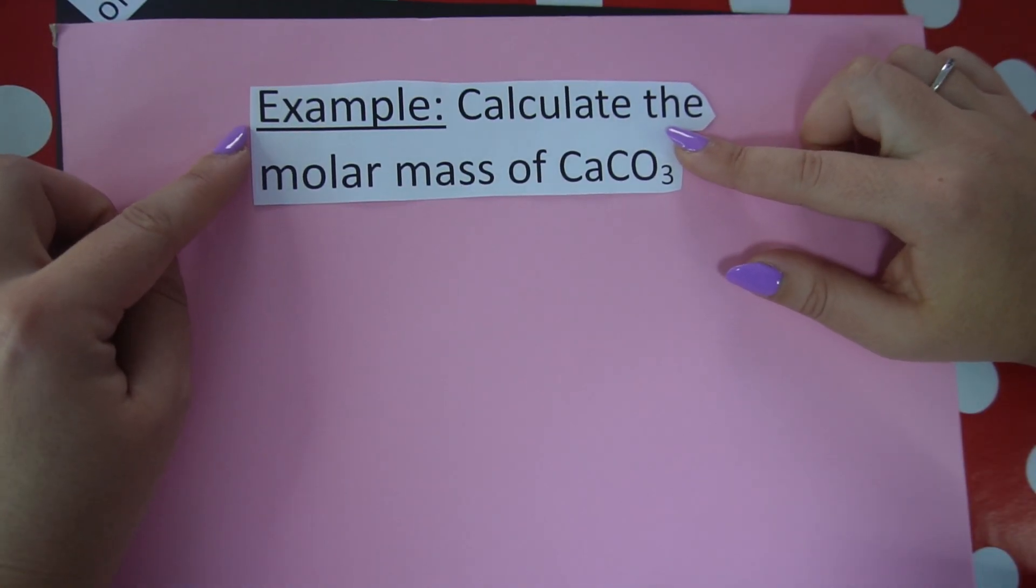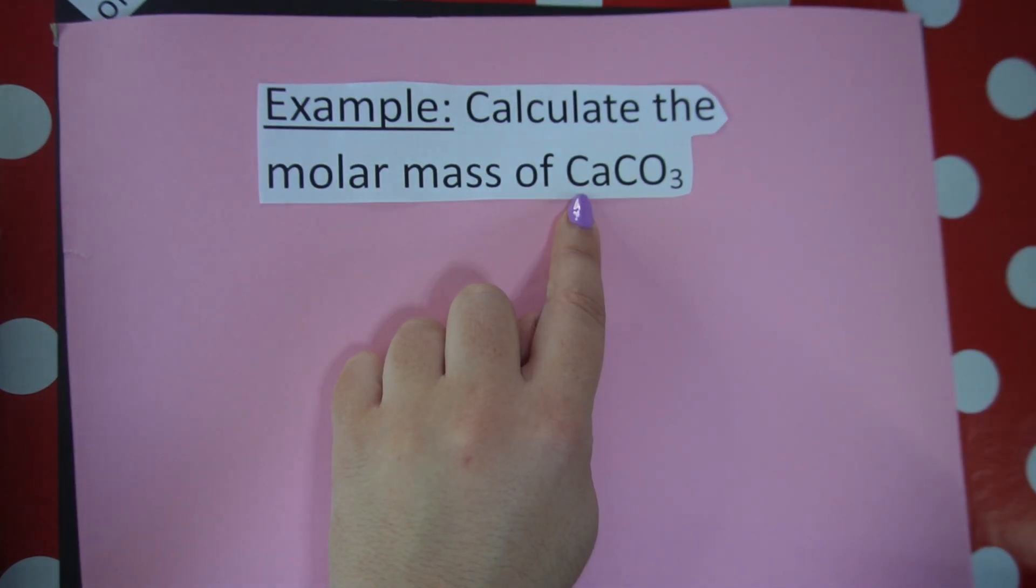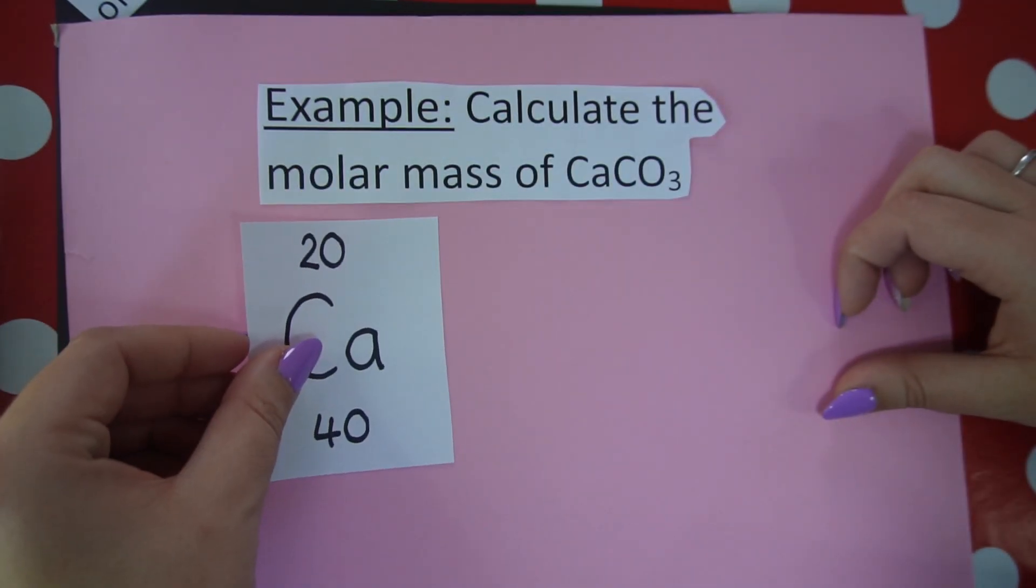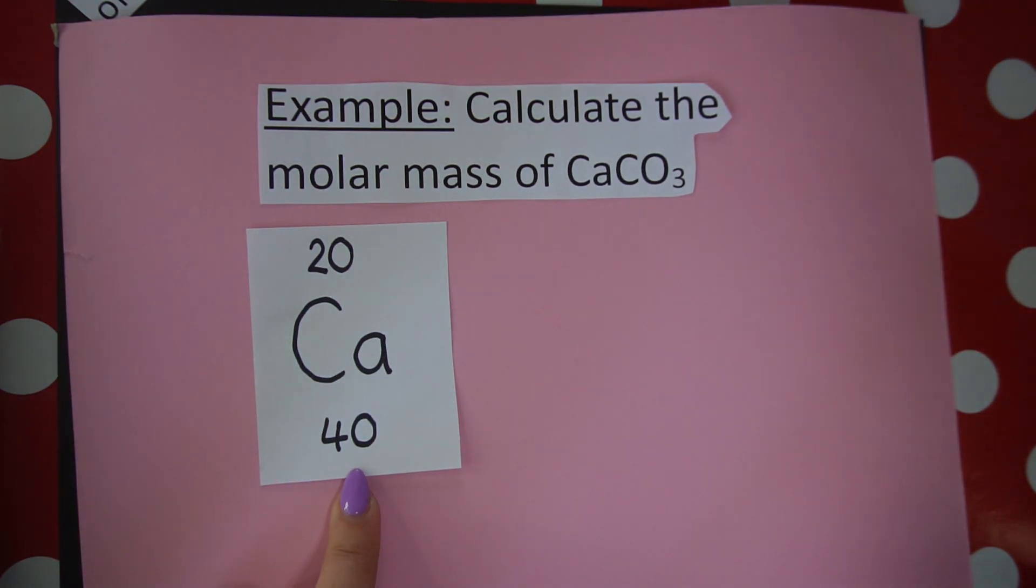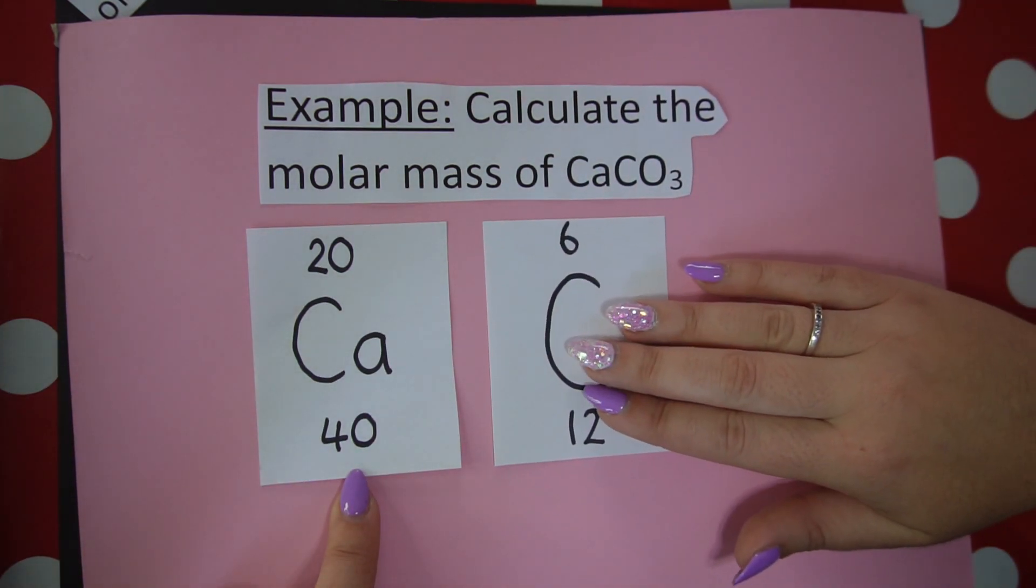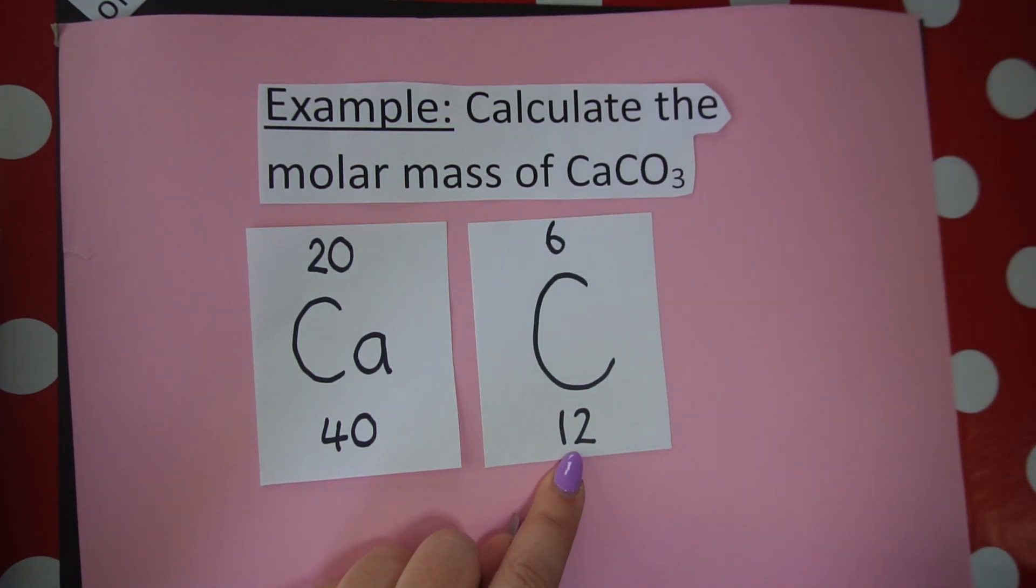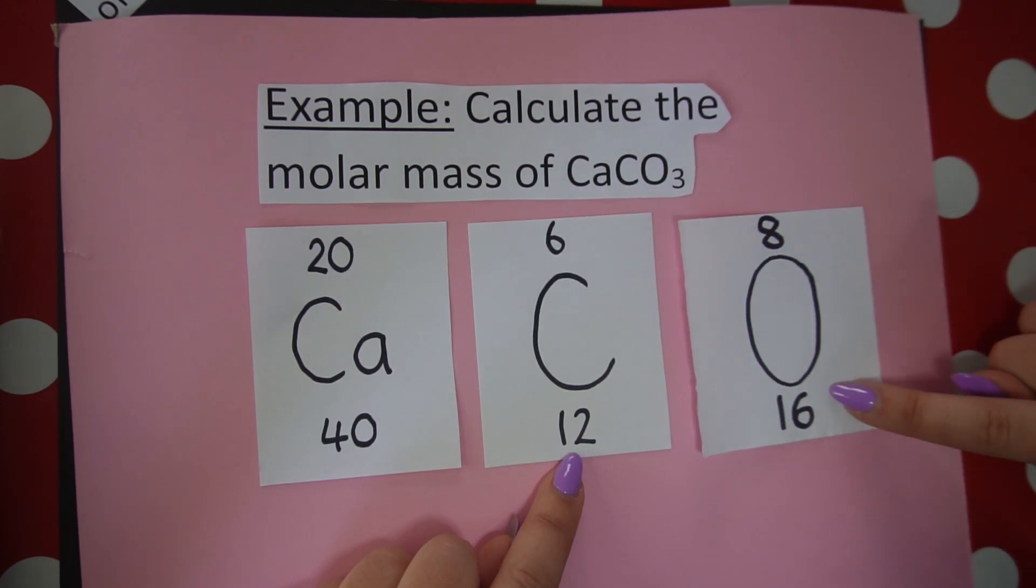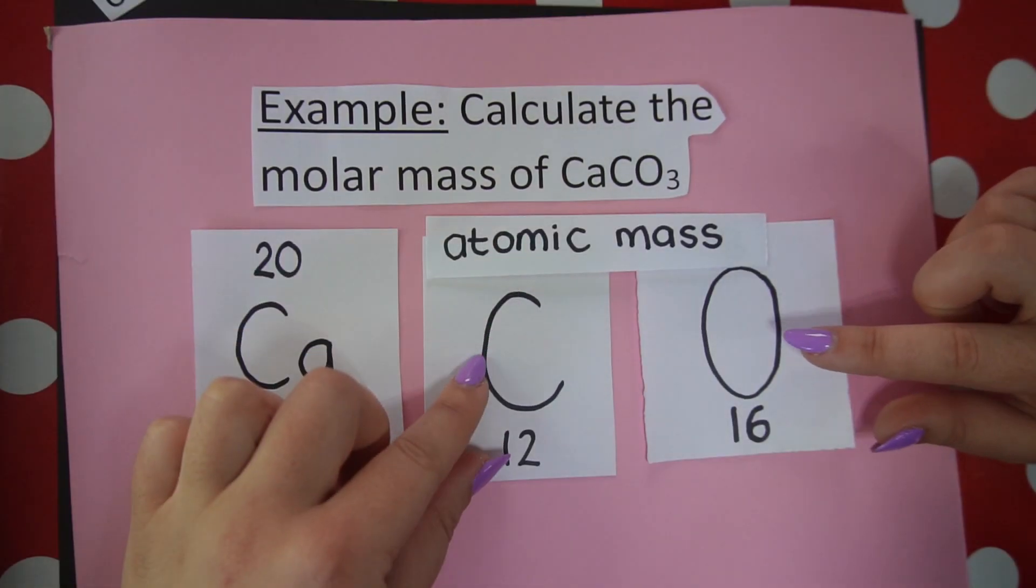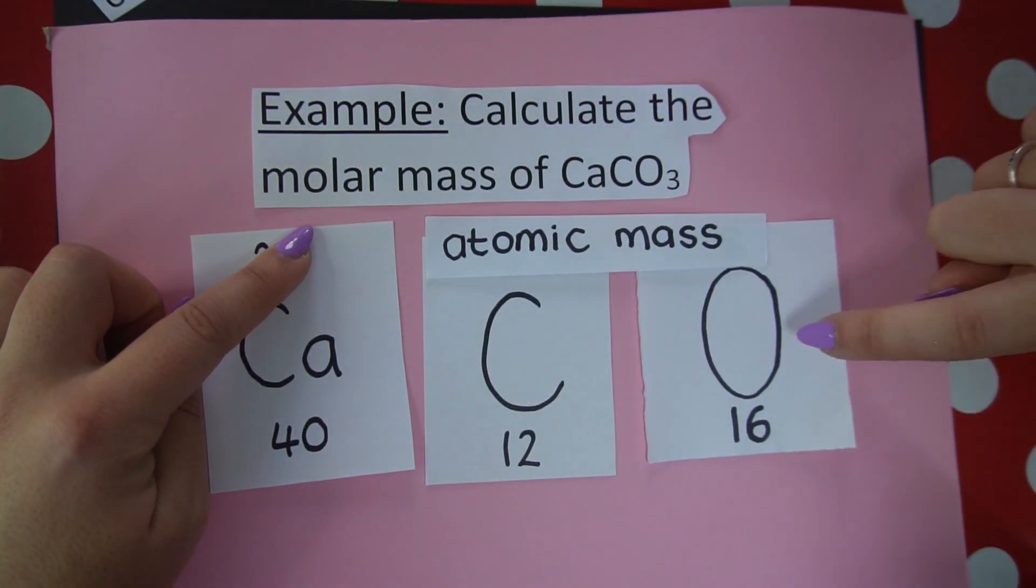In our next example I want us to calculate the molar mass of calcium carbonate, CaCO3. Calcium is our one element with an atomic mass number of 40. Then we've got carbon, our next element, with the atomic mass number of 12. And we've got some oxygens as well. Remember oxygen has an atomic mass number of 16. So the atomic masses are these numbers over here, the big numbers.